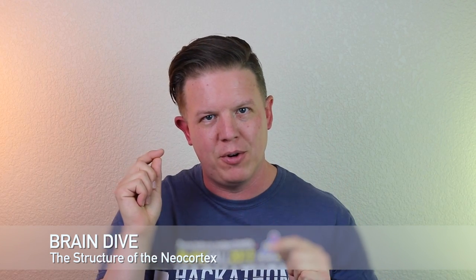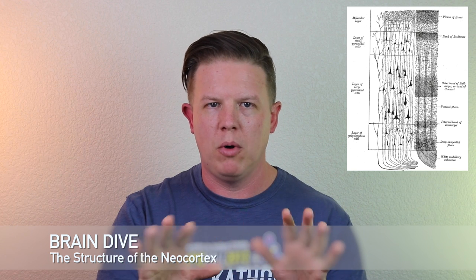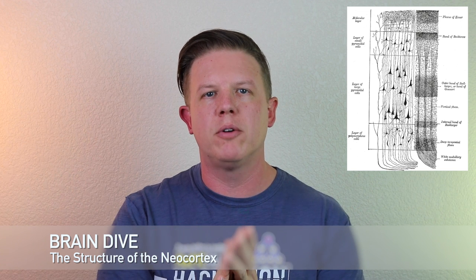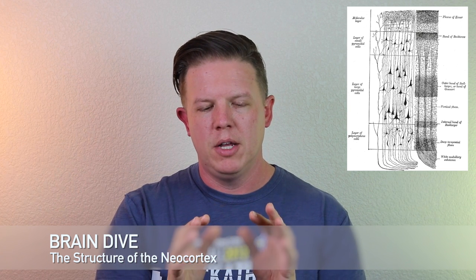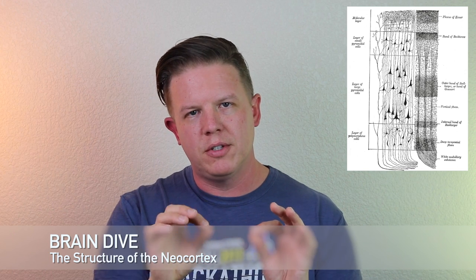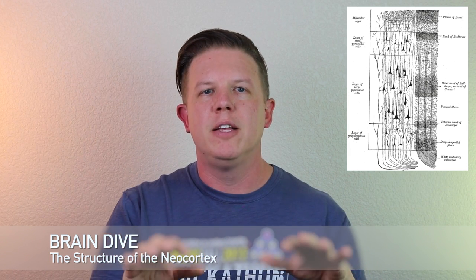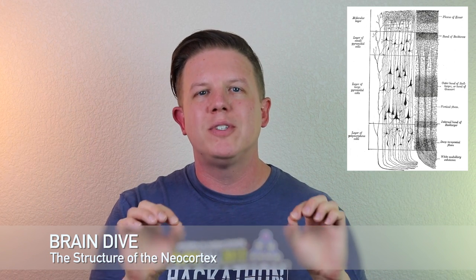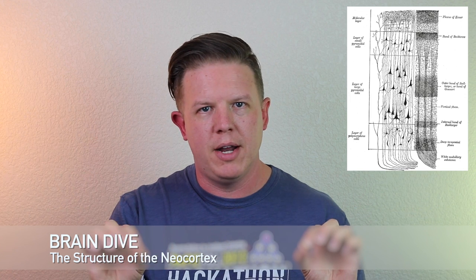If you were to take slices of your neocortex from a bunch of different places in your brain and look at them all under a microscope, you'd see something remarkable. The cellular structure of each one of those slices is going to be almost identical no matter where you cut it from.